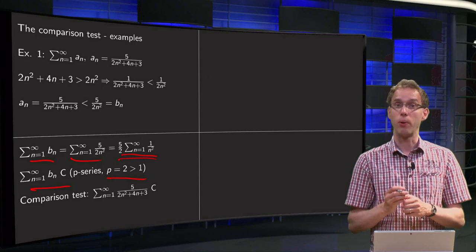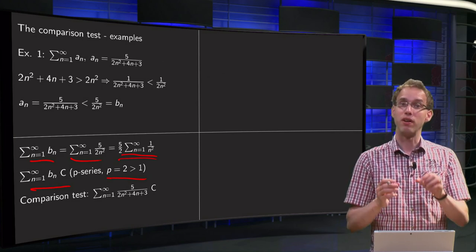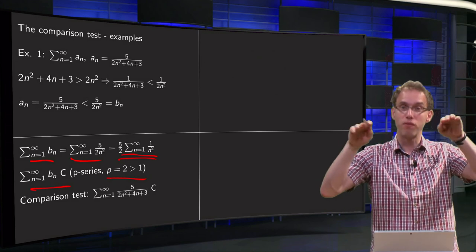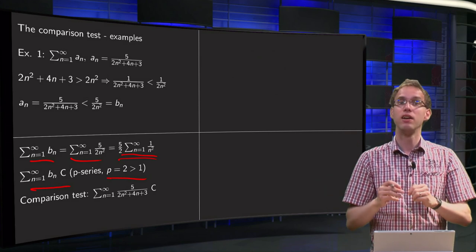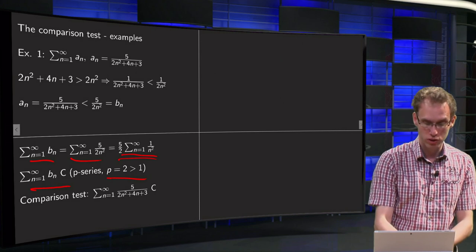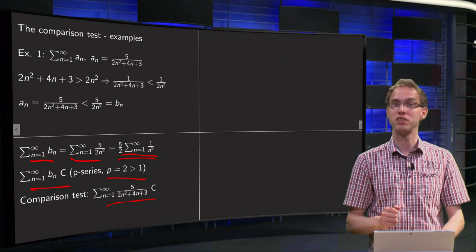So we know our series of the bn converges, we know that all our an are positive, we have a bn series which is above our series with the an, which means that our series with the an also converges due to the comparison test.